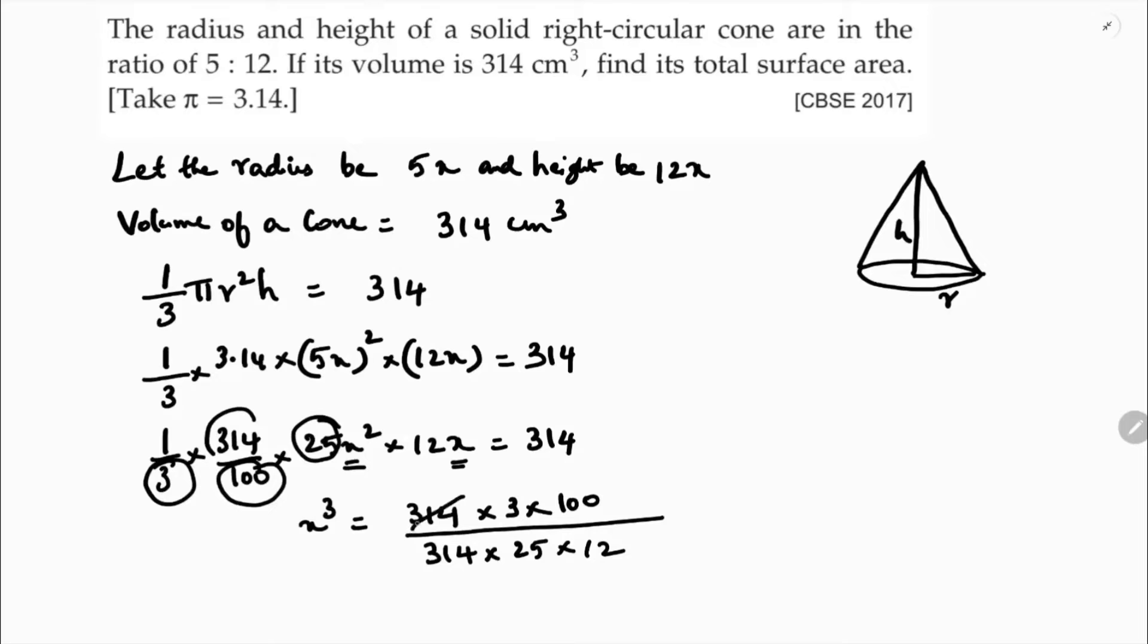So here 314, 314 cancel. We've got x cube is 1. So x equals 1. x cube is 1 cube, so x is 1.